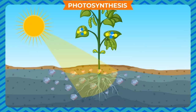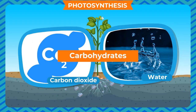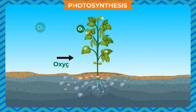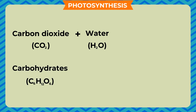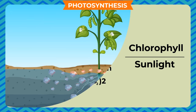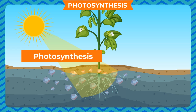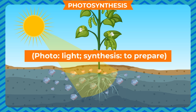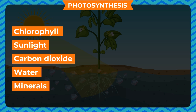Water and minerals are transported to the leaves by thin strand-like filaments spread like pipes throughout the root, stem, branches, and leaves. Using the energy from the Sun, a chemical reaction takes place in the green parts of the plant in which carbon dioxide and water are converted into carbohydrates, and oxygen is released. The equation is: carbon dioxide + water → carbohydrates + oxygen, in the presence of chlorophyll and sunlight. Since this synthesis occurs in the presence of sunlight, it is called photosynthesis — photo meaning light, synthesis meaning to prepare.